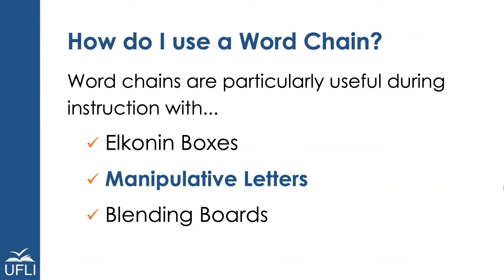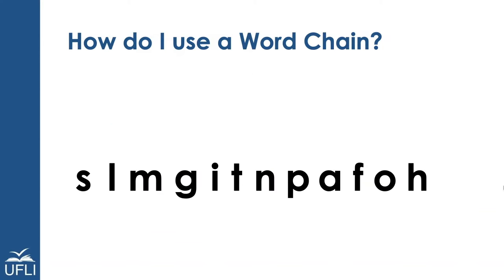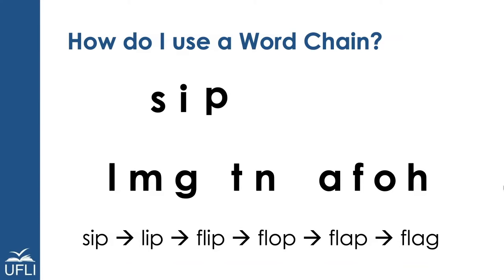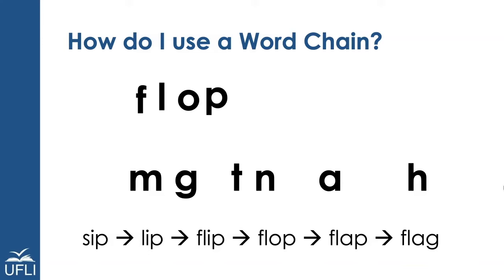Word chains can also be very useful with manipulative letters. Manipulative letters can be magnetic letters or letter tiles. If I'm using them with a word chain, I might start by asking my student to spell the word sip. Change sip to lip. Add an f at the beginning of lip — what word do I have? Change flip to flop. Now change the o to an a — what word do you have? Now change flap to flag.